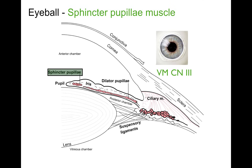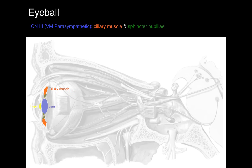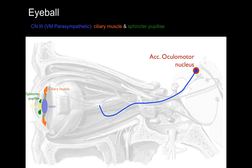Now we look at the pupil. The sphincter pupillae muscle is shown in green. This muscle makes the pupil diameter smaller, restricting the amount of light that comes in — like when you shine a pen light in a patient's eye. The accessory ocular motor nucleus is the origin of this parasympathetic pathway. It sends a preganglionic parasympathetic nerve along with cranial nerve 3 to synapse in the ciliary ganglion, a peripheral ganglion. Then postganglionic parasympathetics travel along cranial nerve 3 to cause the sphincter pupillae muscle to contract and constrict the pupil.